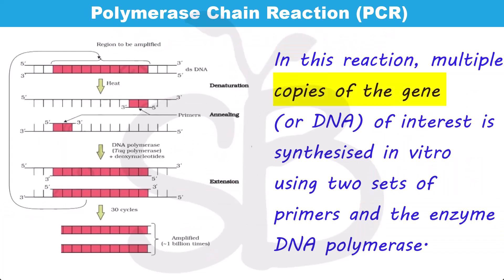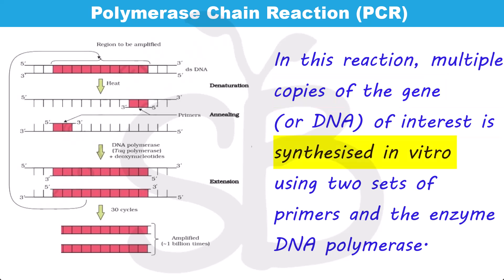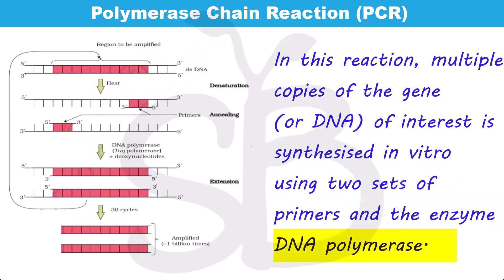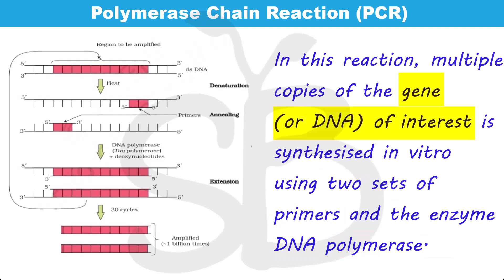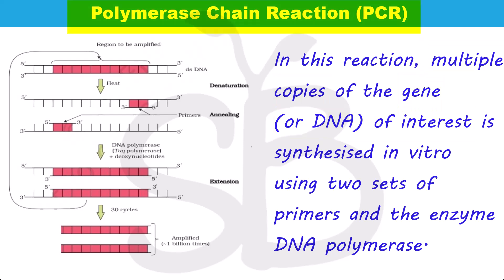In PCR, multiple copies of the gene or DNA of interest are synthesized in vitro using two sets of primers and the enzyme DNA polymerase. DNA polymerase is used along with two sets of primers to produce multiple copies of the gene of interest. This is the polymerase chain reaction, or PCR.